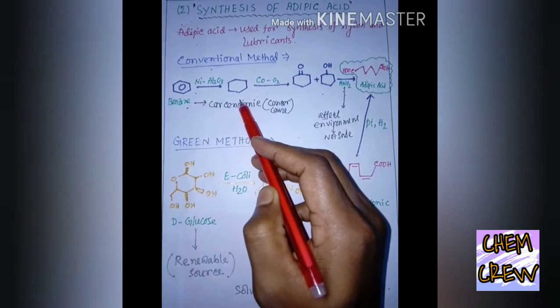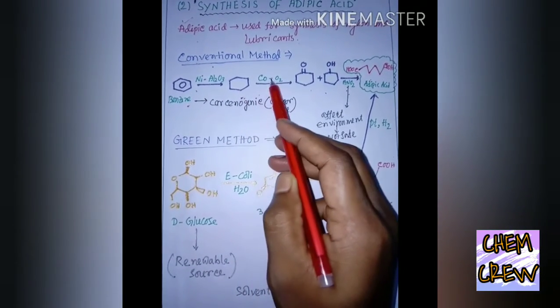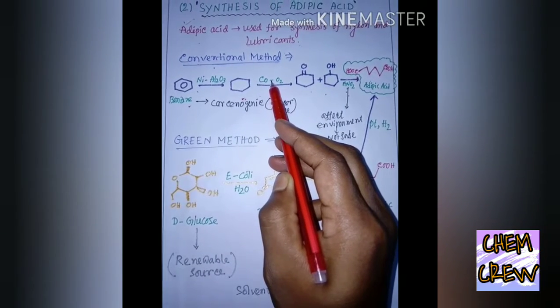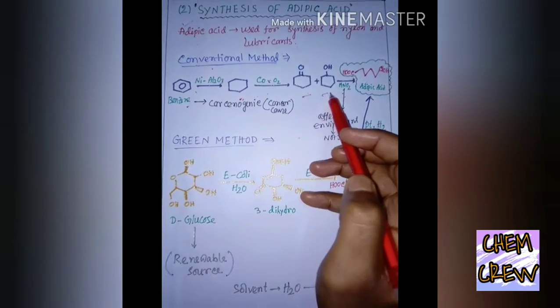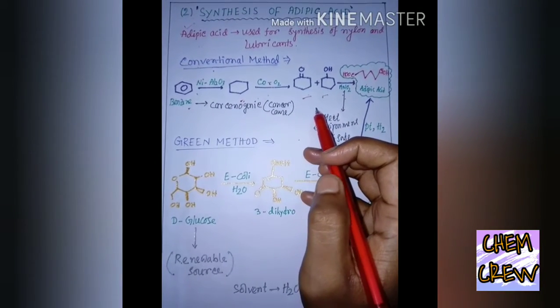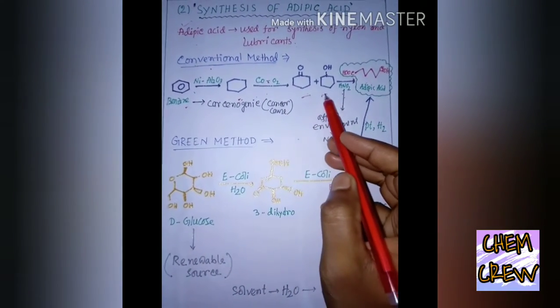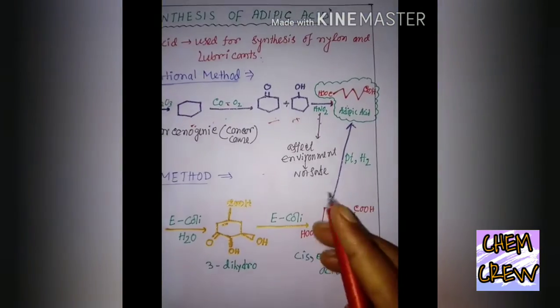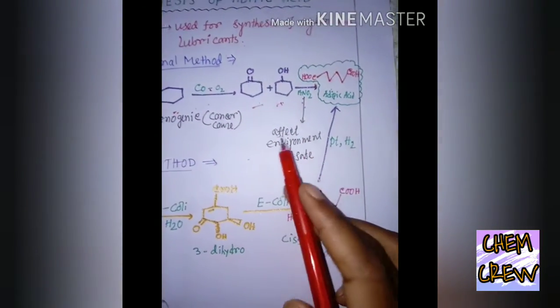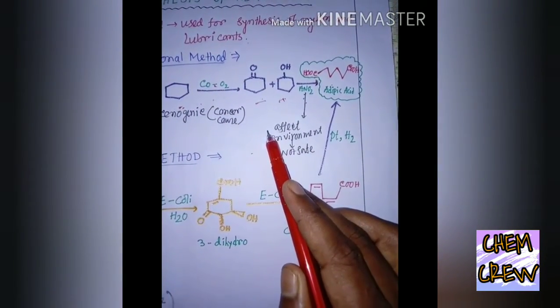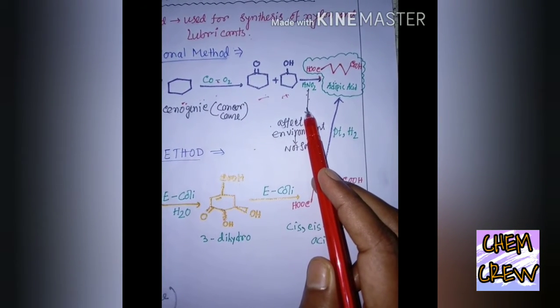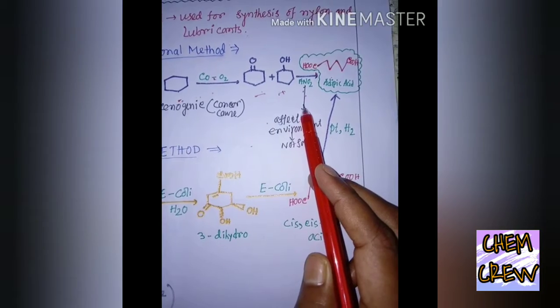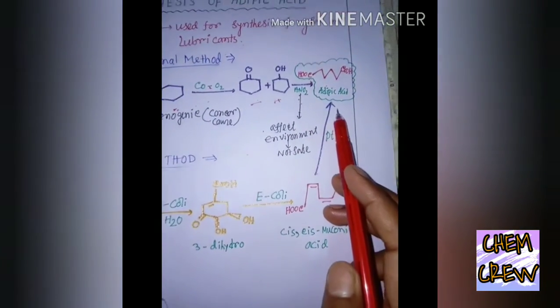cyclohexene is treated with this catalyst and it is changing into these two products, cyclohexanol and cyclohexanone. Now, these two react with HNO3, nitrous acid, and we are getting adipic acid.